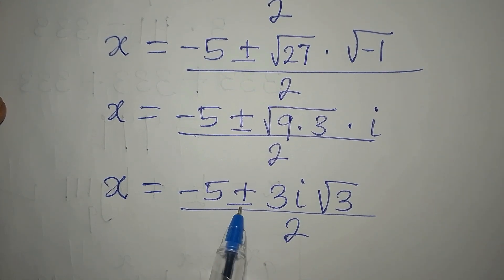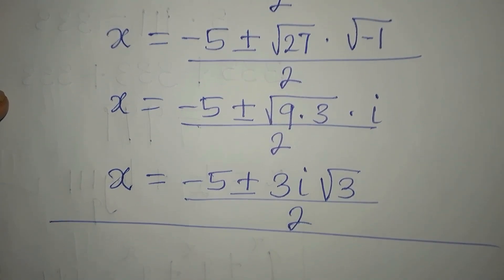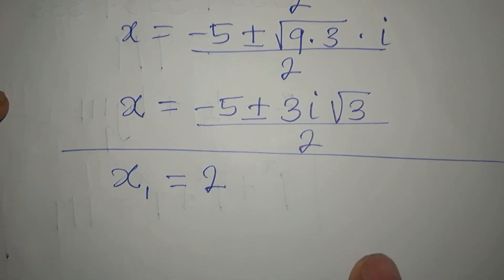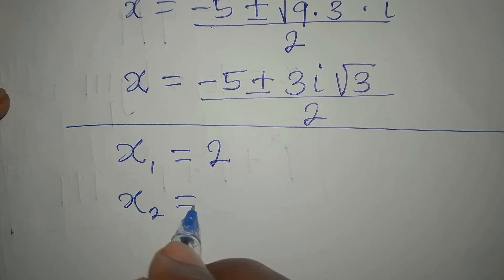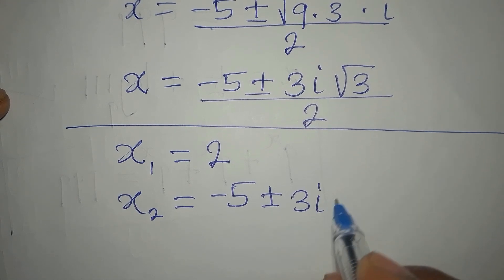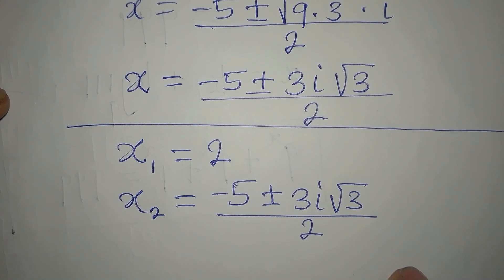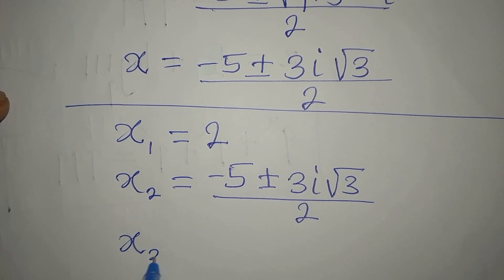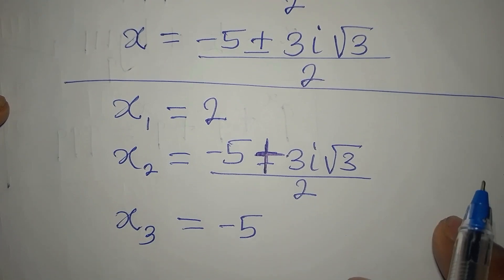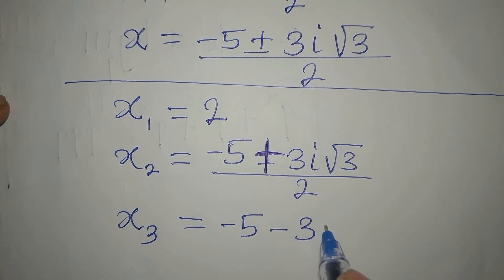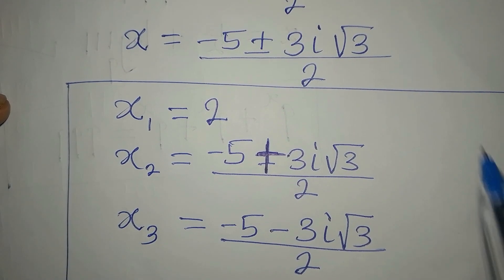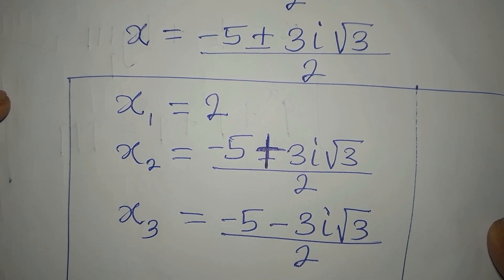So the three solutions are: x₁ = 2, x₂ = (-5 + 3i√3) / 2, and x₃ = (-5 - 3i√3) / 2. These are the complete solutions to the equation. Thank you for watching.